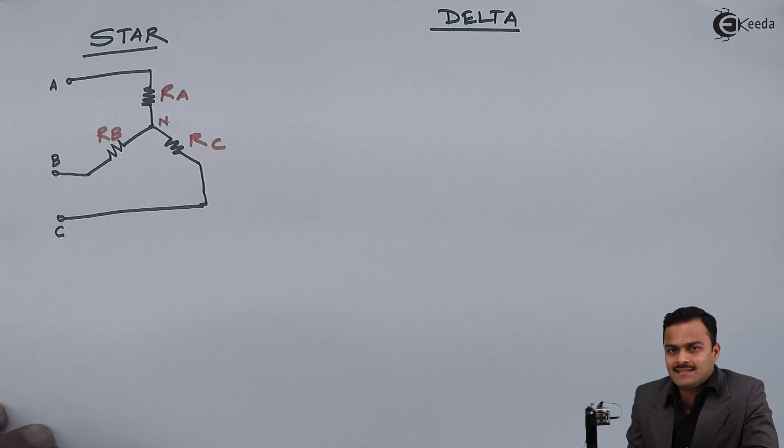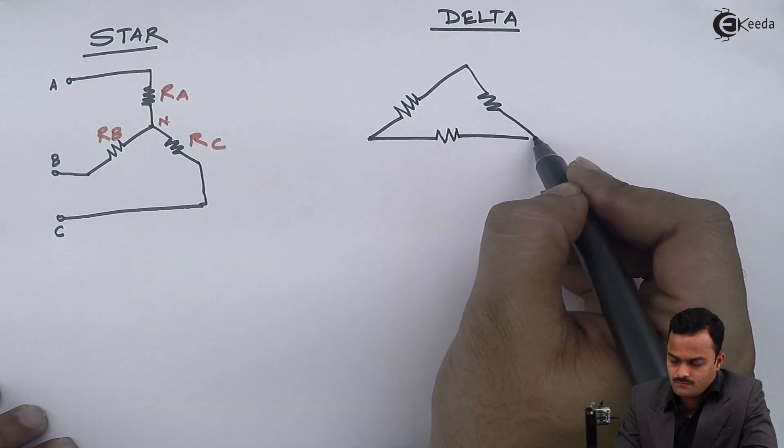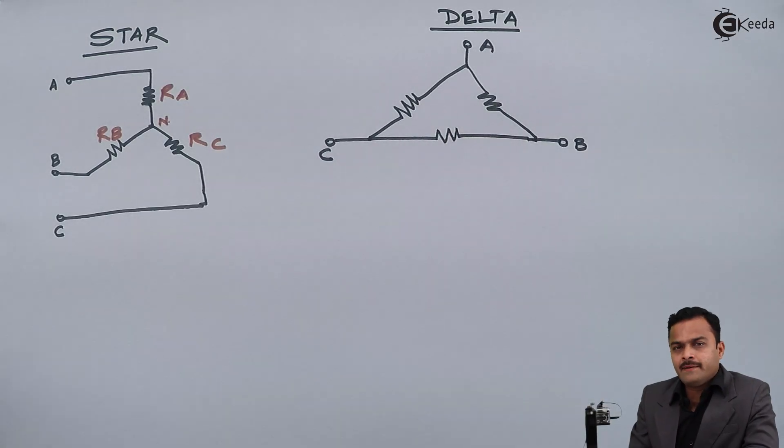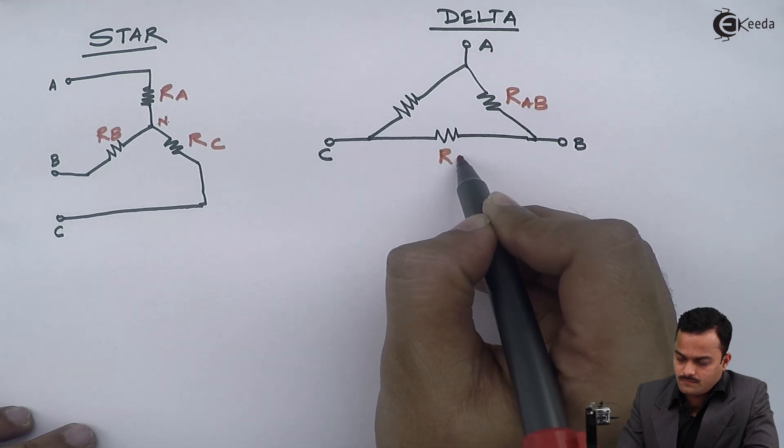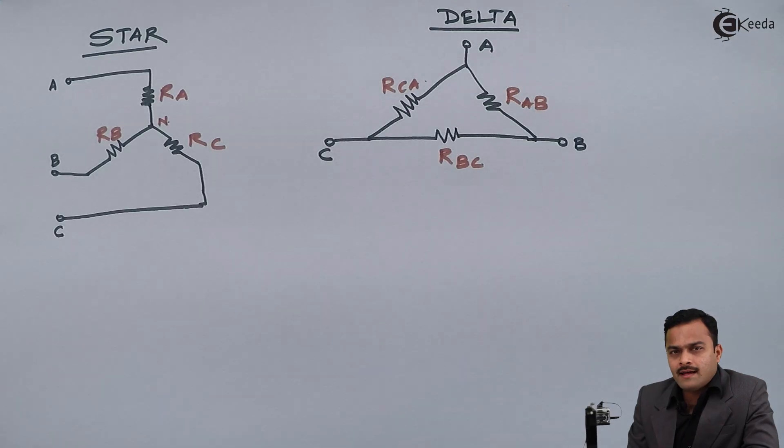Similarly delta, again three resistors, I will name the resistors. Let's analyze this circuit.